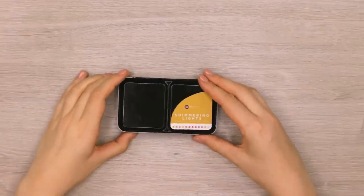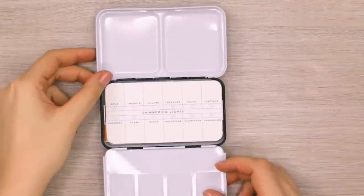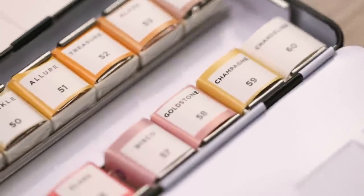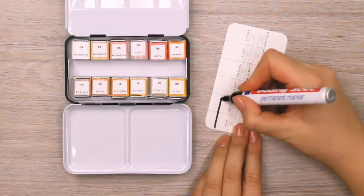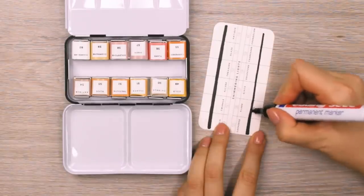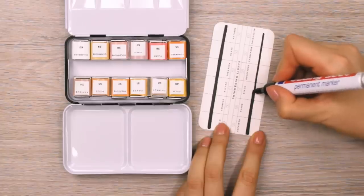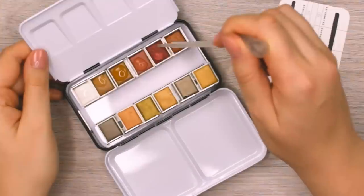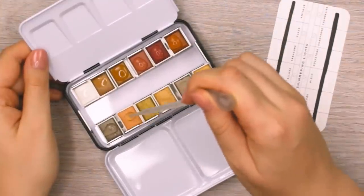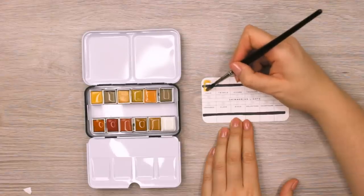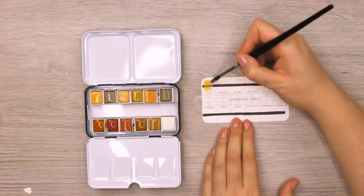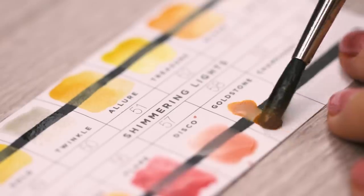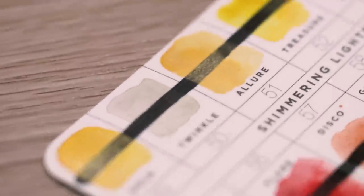Last but not least, I really wanted to test out this Prima watercolors confection set called Shimmering Lights. It comes with 12 different colors and you get it for about $21. To see how opaque the paint is, I added a thick line using permanent black marker to the chart it came with. Now, these watercolors felt a lot more transparent than the rest of the paints we have tested. I felt like regular watercolors were just mixed with a tiny amount of shimmery particles to make the watercolors shimmer a little bit. So all in all, the paint was rather transparent and not opaque at all. Only a few colors covered up the black line, but the rest stayed pretty transparent.